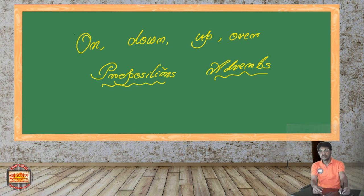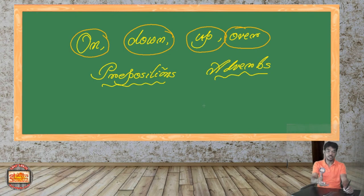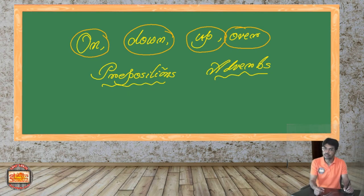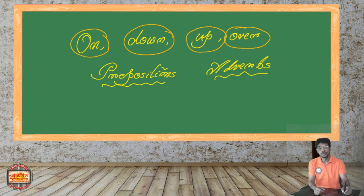Remember, these words are very elusive. They are elusive because when they are used in a sentence they may change their functions. For parts of speech, the function of a word is very important. We consider the parts of speech according to the functions they are performing in a sentence. So first you have to find out what functions they are performing in that sentence, and only then you can decide whether they are prepositions or adverbs.